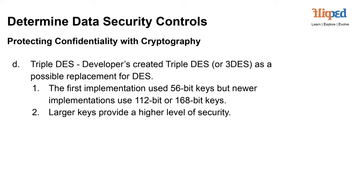As we navigate the seas of cybersecurity, our next stop is a fascinating encryption technique known as Triple DES. Point D: Triple DES, or 3DES, emerges on the scene as a potential successor to DES — the Data Encryption Standard. In its infancy, 3DES used 56-bit keys, but evolution has led to the adoption of more robust key sizes. Newer implementations embrace 112-bit or 168-bit keys, enhancing our shield of protection. Remember, in the realm of cryptography, larger keys mean a higher level of security.